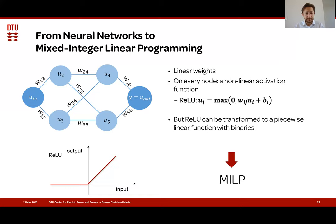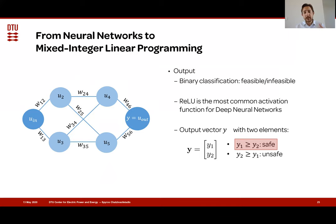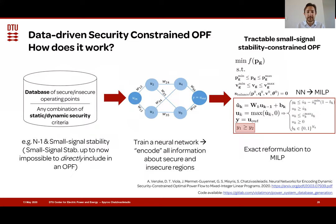Before going into the problem formulation, let me add one more thing about the output. This is a classification problem. The output of the neural network says whether an input is feasible or infeasible. We encode the output in an output vector y with two elements, y1 and y2. If y1 is larger than y2, then the input is classified as safe. If y2 is larger than y1, then it's considered unsafe. We take this inequality and include it in our MILP, as I'll show in the next slide.